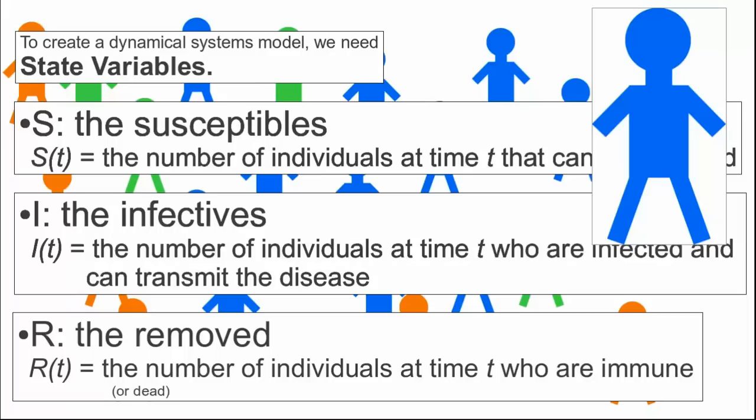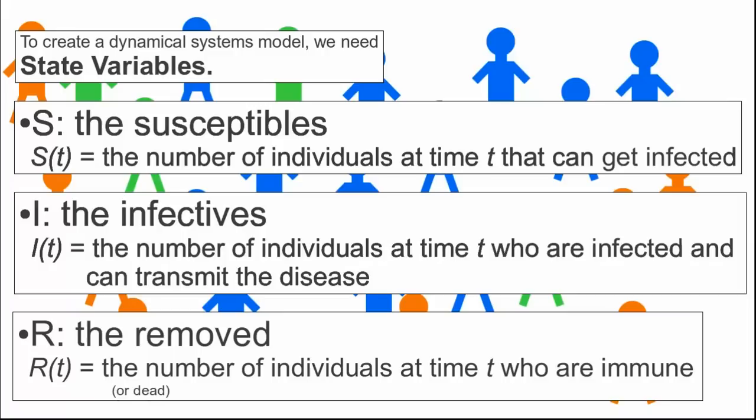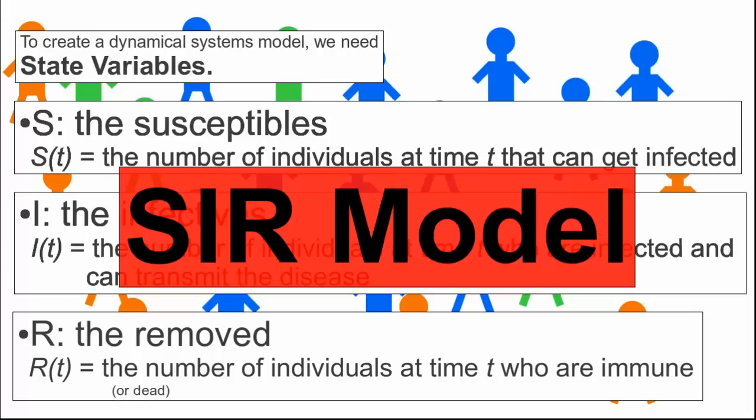Since everyone is mixing around and we don't have to keep track of the location of individuals, if we know S, I, and R, we know everything about the state of the system. The infectious disease model with these three state variables is called the S, I, R model.